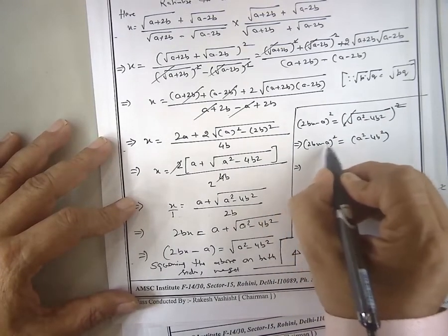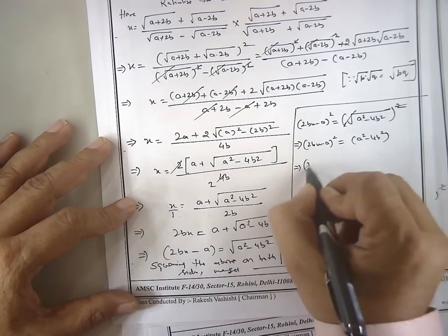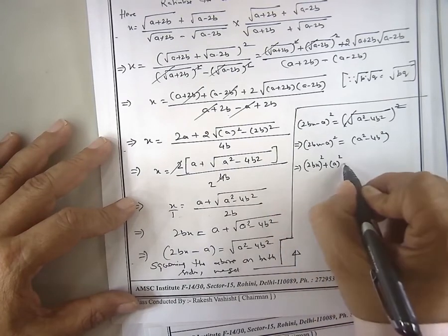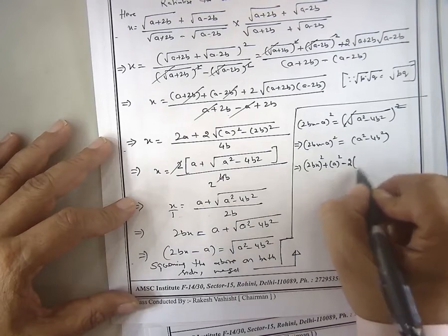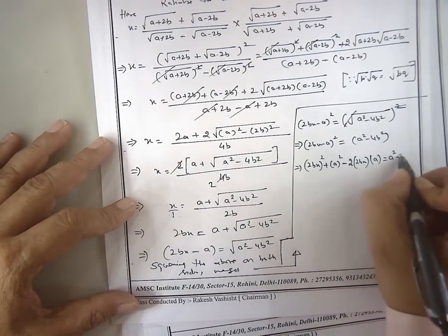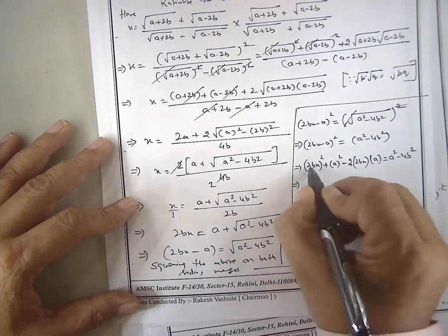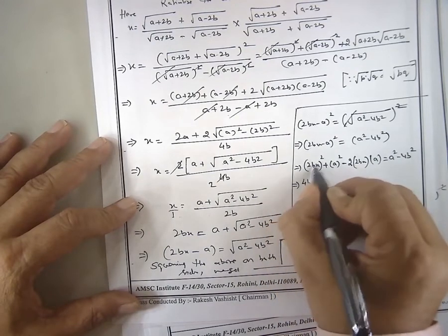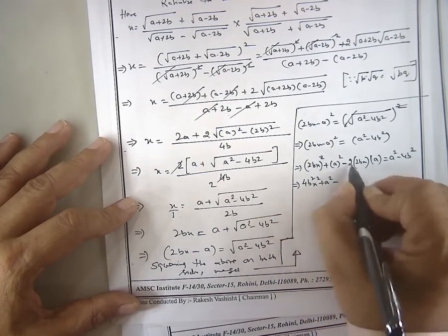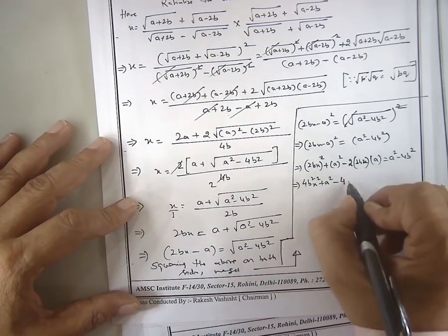That squared minus 2 into a into b equals a squared minus 4. This squared, this squared, x squared, that squared. 4abx, 4abx is equal to a squared minus this squared plus squared.